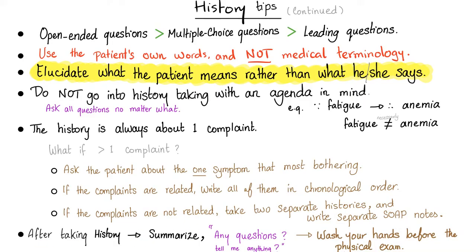After taking the history, summarize it back to the patient: 'So I understand you have chest pain that is central, increases with exertion, decreases with rest or nitroglycerin, radiates to your jaw and arm, and you're worried because your dad died from a heart attack. Is this an accurate summary?' Ask if they have any other questions, then wash your hands before starting the physical exam.